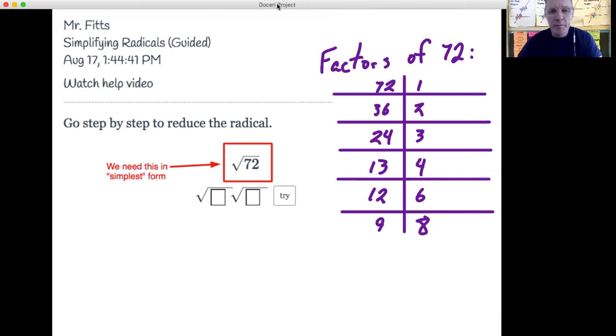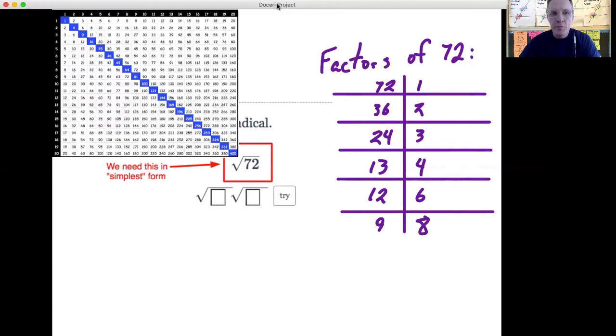It's divisible by 4, 13 times 4. It's divisible by 6. It's even and divisible by 3. So 12 times 6 is 72. And also 9 times 8. So this is another reason why it's good to know your multiplication table. So once you've done this, what you do is you look in this table for square numbers.